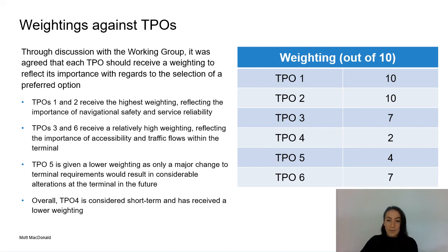The impact of the appraisal against TPO5 is considered to be less critical to the overall assessment, as the options are being designed to be suitable for use for a minimum of 60 years and only a major change to the ferry terminal requirements would result in further major works at Gourock. Lastly, TPO4 is considered to be short term and the project team will work to minimise any disruption to the service during the construction phase.